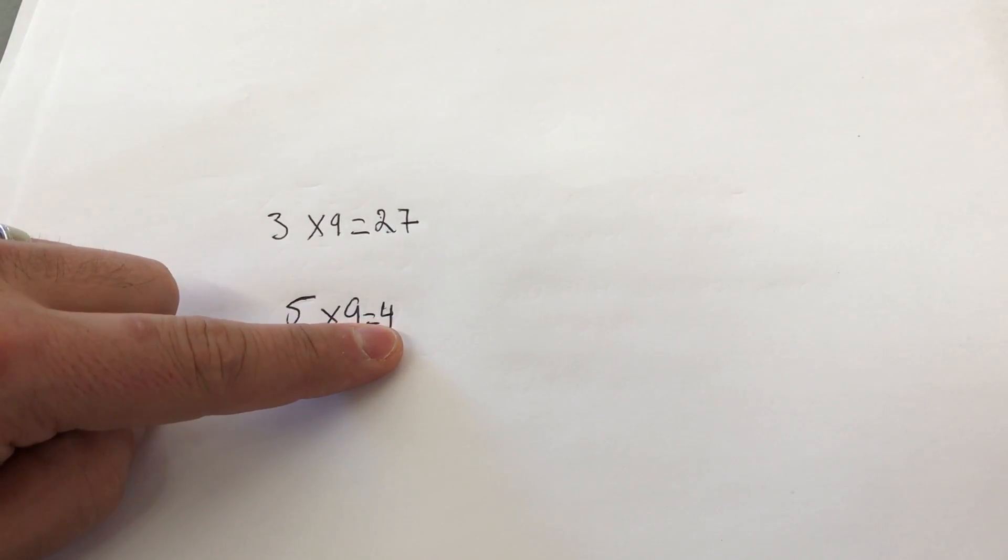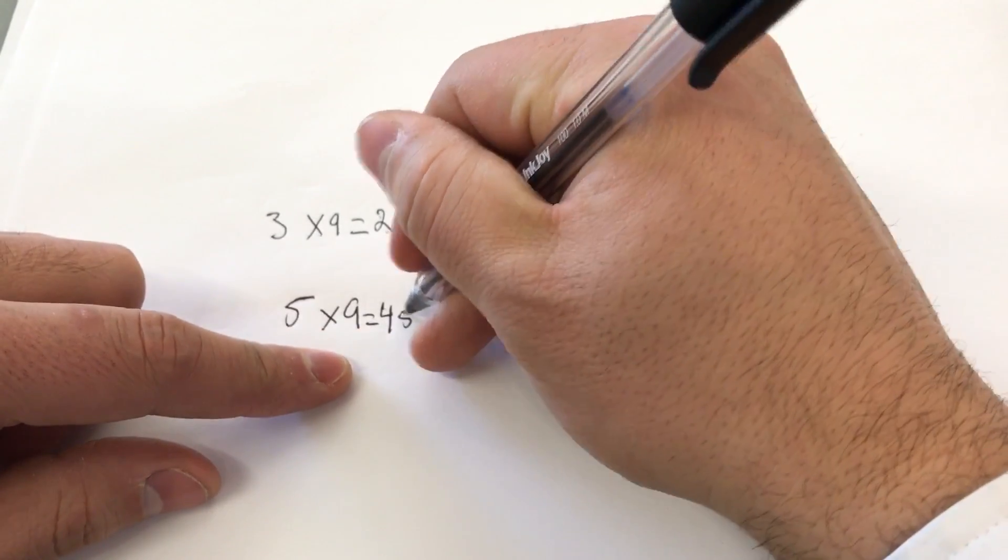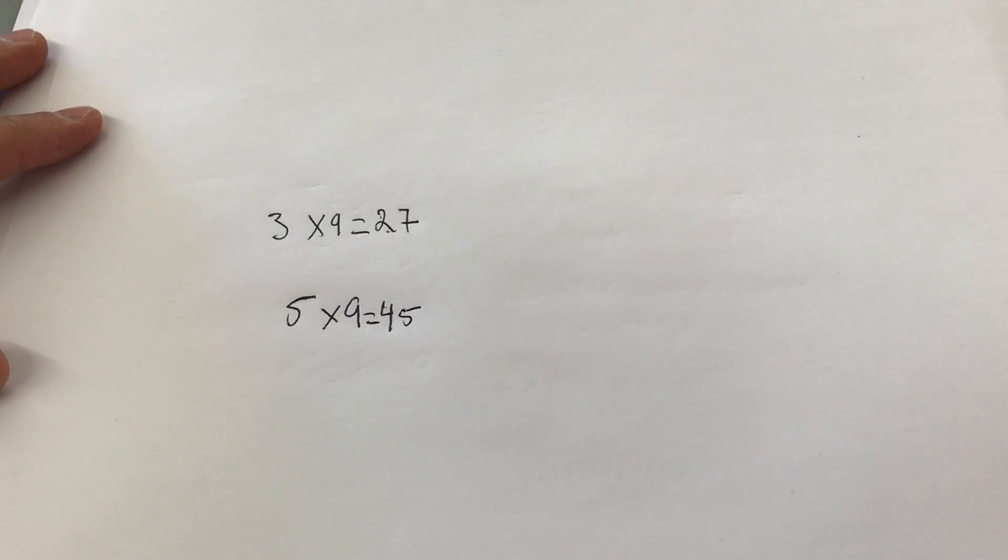Then we take this number, 4, which is the answer from the first part, and subtract it from 9. The answer, 9 minus 4, is 5. That's the second digit. So simple.